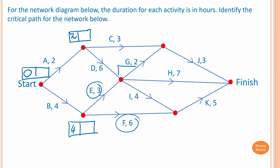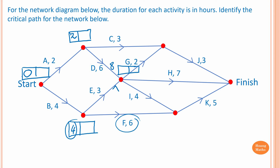For the earliest starting time for G, H, and I: two plus six equals eight, and four plus three equals seven. Since eight is larger, the earliest starting time is eight hours. Remember, forward scanning uses the largest value.